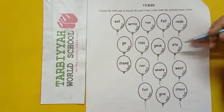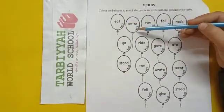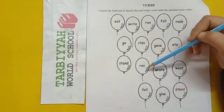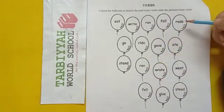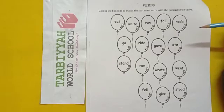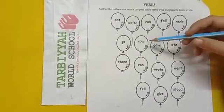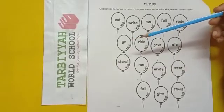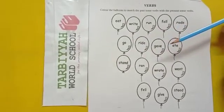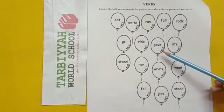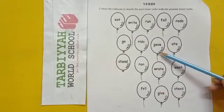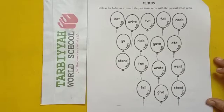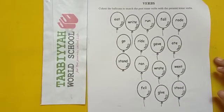The past tense of 'eat' is 'ate'. The past tense of 'write' is 'wrote'. You have to color the balloons to match the past tense verb with the present tense verb.